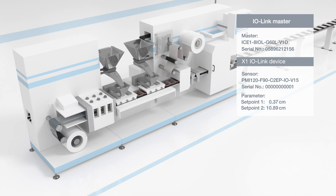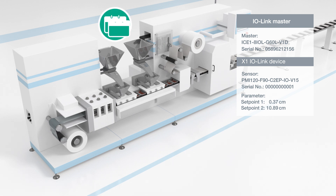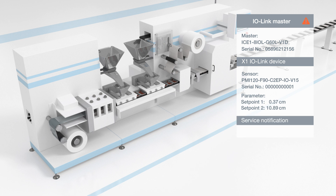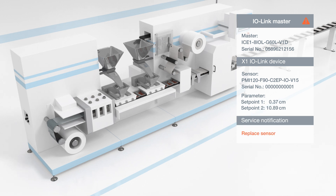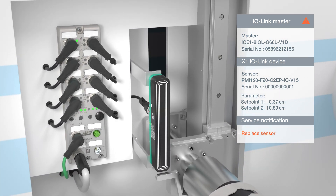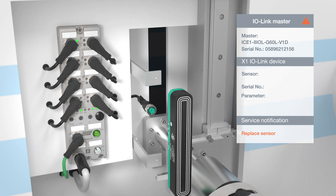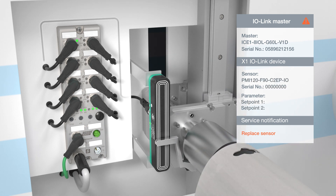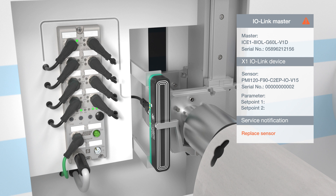The advantages of the previously activated data storage function are clear when an IO-Link device must be replaced. If the device is replaced with the same type of device, the parameter data stored in the IO-Link master is automatically transferred to the new device. Because of this, the system is once again fully functional without manual parameterization of the new device. IO-Link devices can be replaced quickly and easily with the help of the data storage function.